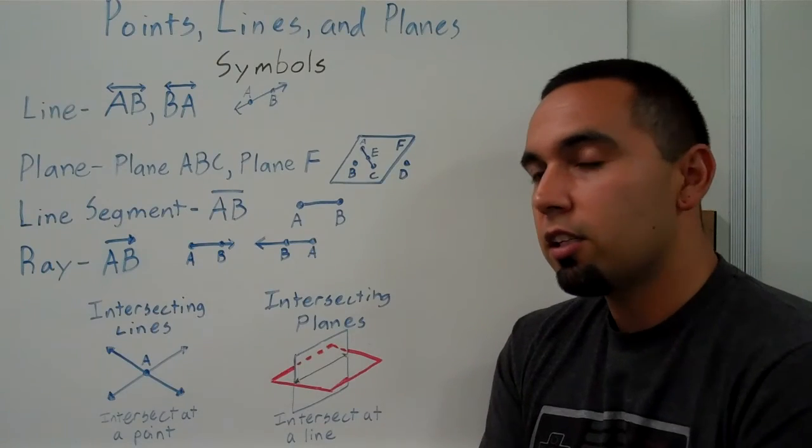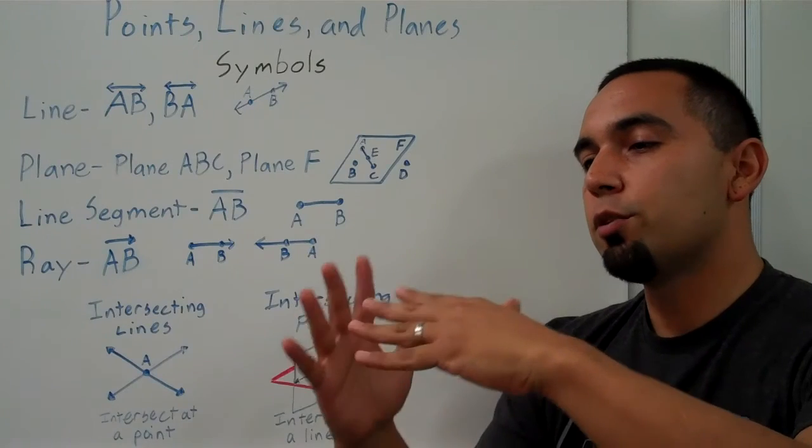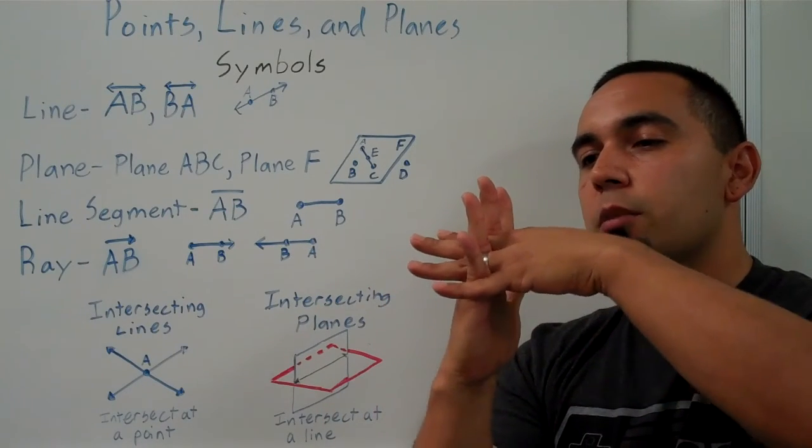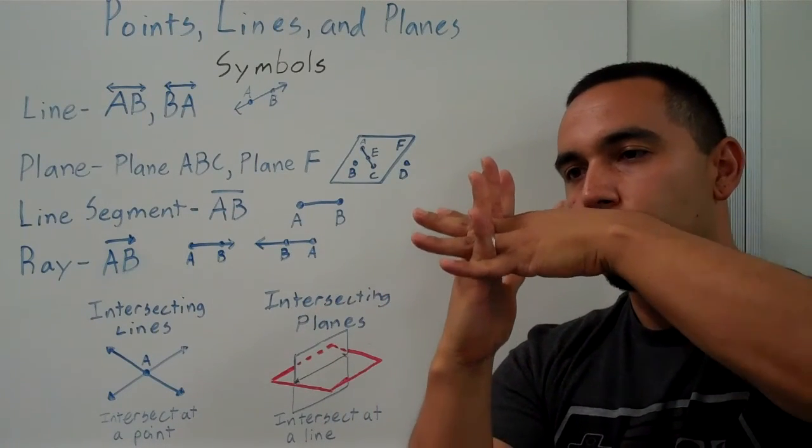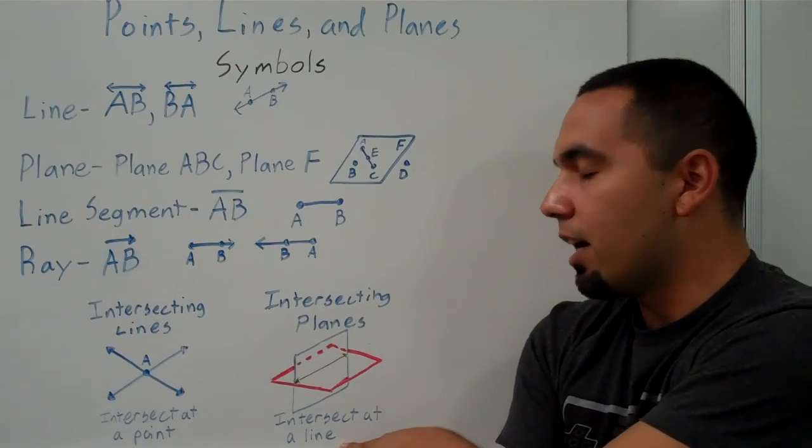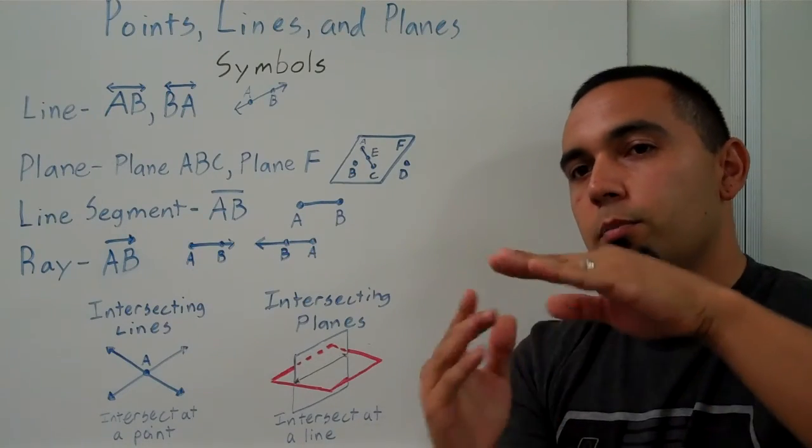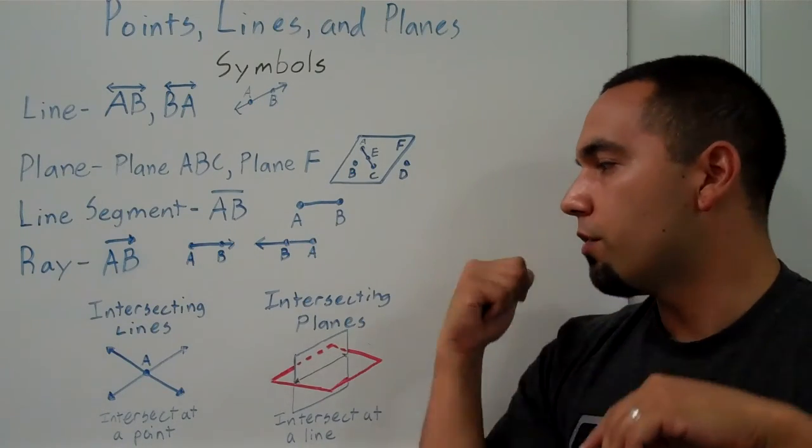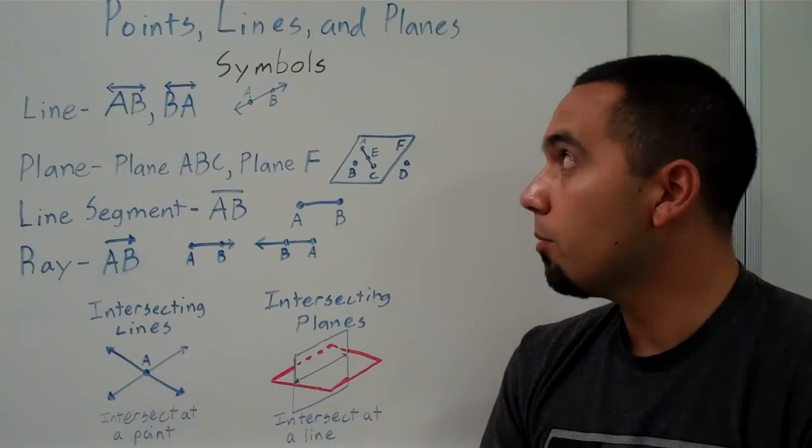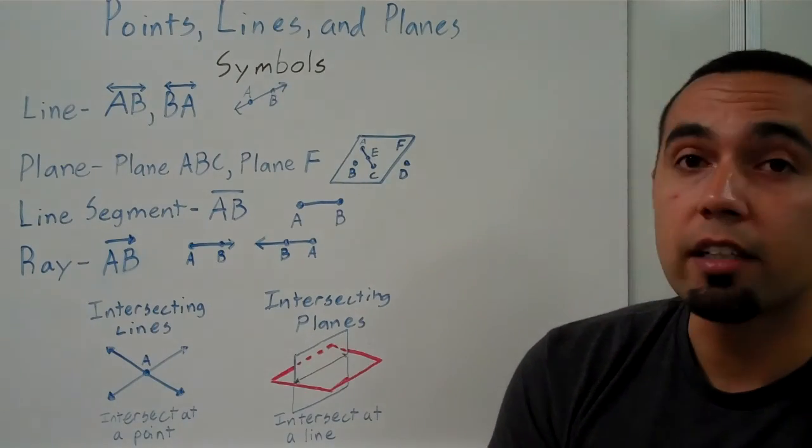And then here we have intersecting planes. Now, intersecting planes, like I said, a plane is something that's flat, and it goes on forever in all directions. If we have two of them that intersect, you can imagine my two hands being two planes, one going up, one going down, just like the picture. They intersect at a line. Or their intersection forms a line because it just goes on and on forever in both directions. And that is our symbols for points, lines, and planes.